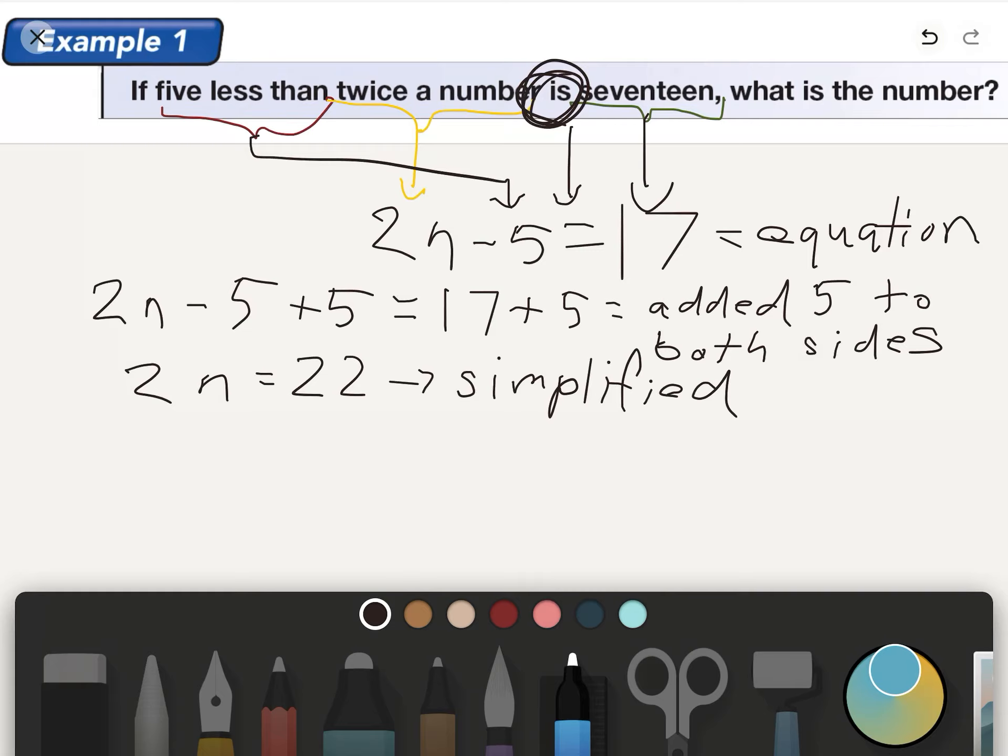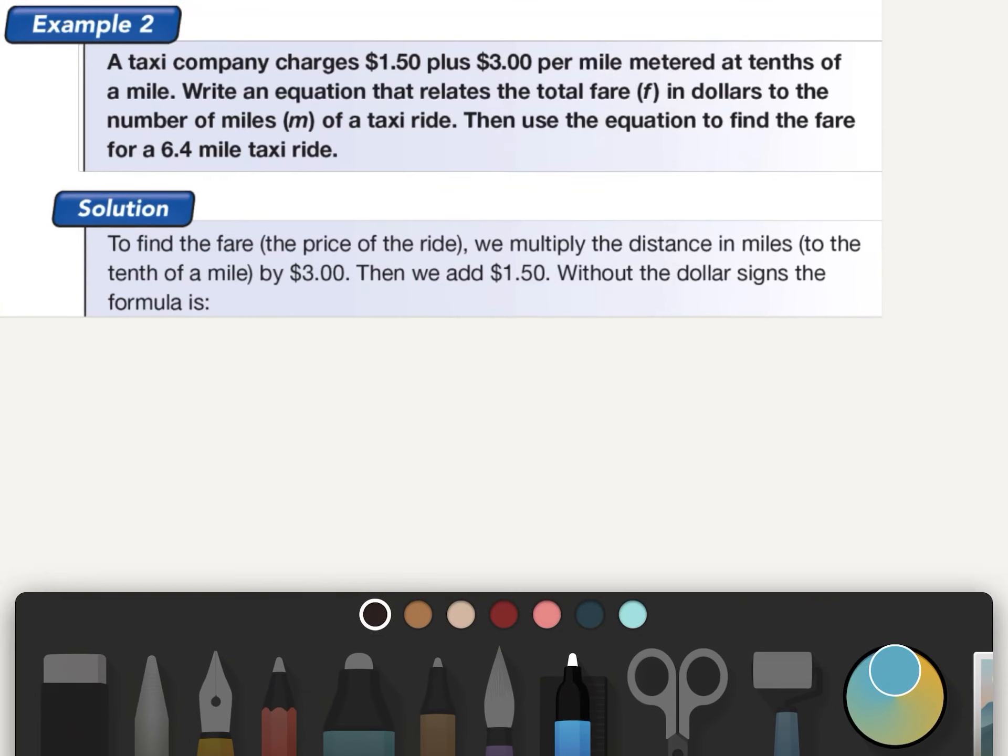So now we'll do our next step. So we'll divide each side by 2. We did it! So if we're describing the action, we can say we divided both sides by 2. And so in doing so, we get n. The number is 11. And so our final answer has been simplified!